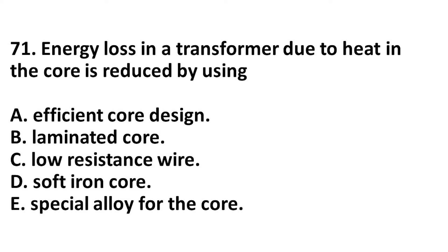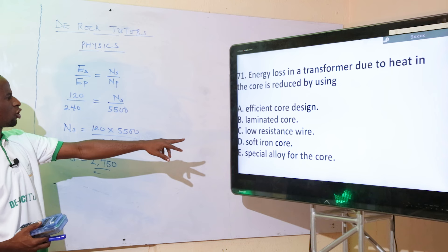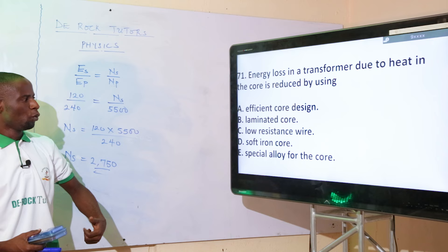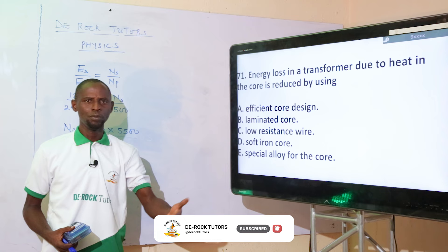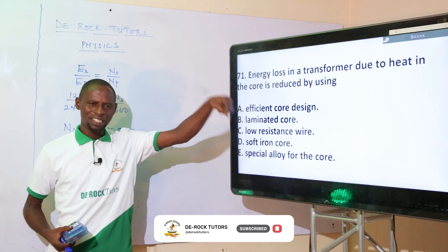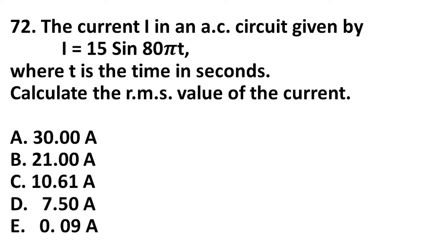Energy loss in a transformer due to heat in the core is reduced by using what? To prevent heat loss we need to use a low-resistance wire or increase the size of the wire. The correct option is option C: by reducing the resistance of the conductor. When the resistance is high, heat is generated, so to prevent this we reduce the resistance of the conductor.